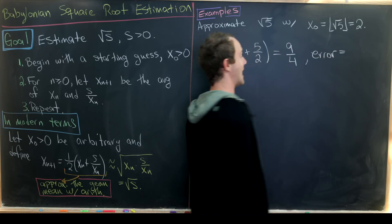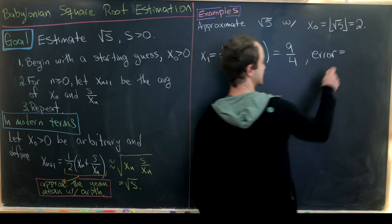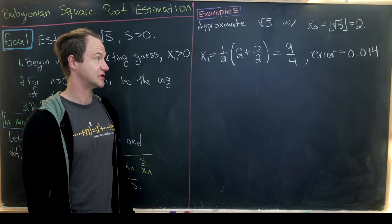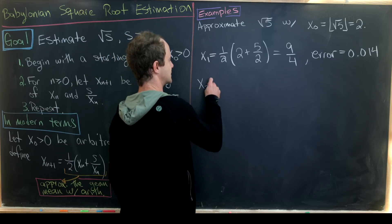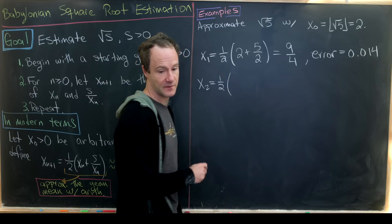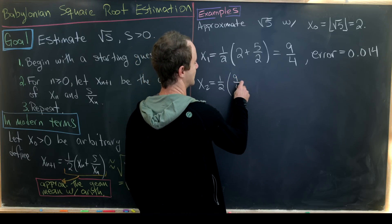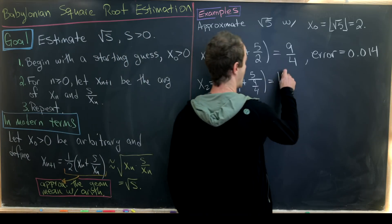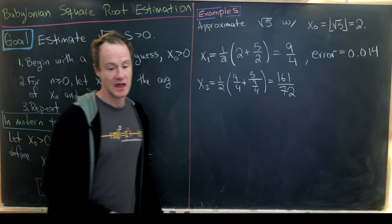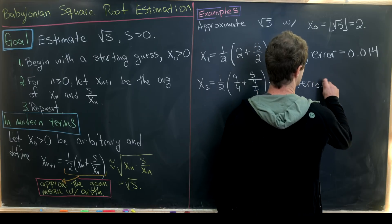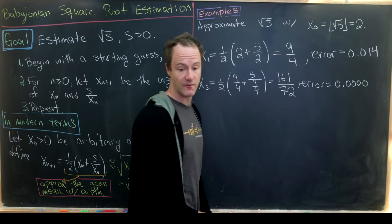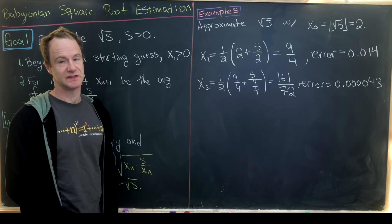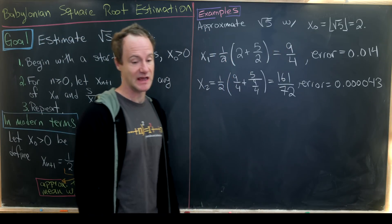We end up with 9/4, and I've calculated the error as we go here. The error in this case is 0.014, so already we're getting a pretty good approximation. For x₂, that will be ½(9/4 + 5/(9/4)). Doing that calculation, we end up with 161/72. And the error here is even smaller, 0.000043. So this is a very quickly converging sequence, but I think most of that has to do with the fact that we made a very good guess at first.